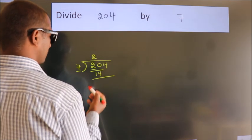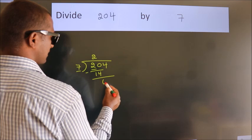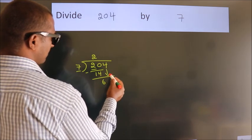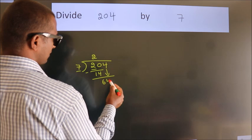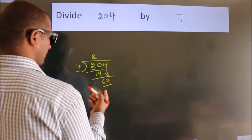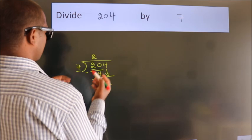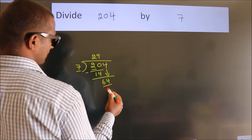Now we should subtract. We get 6. After this, bring down the beside number. So 4 down. So 64. A number close to 64 in the 7 table is 7 nines, 63.